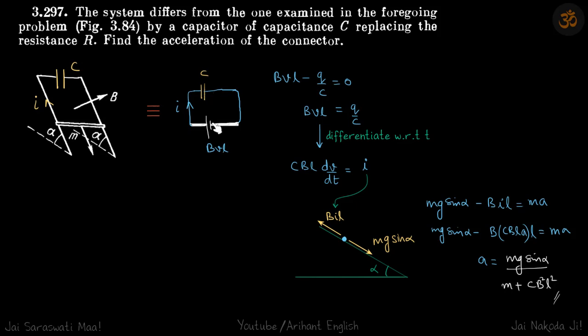So now on this capacitor and the battery we can write the KVL equation BVL minus Q by C is equal to 0. So we differentiate this so that we get the value of current.